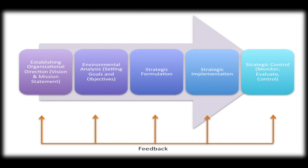The strategic management process consists of five interrelated stages. The first is establishing the organization's direction — the vision and mission statement. The second stage is environmental analysis, which consists of goal setting and objectives. It involves an environmental scan and a SWOT analysis, which we will cover in detail here. We will review stages three, four, and five as we progress through this course. For this module, we will continue our discussion on stages one and two.